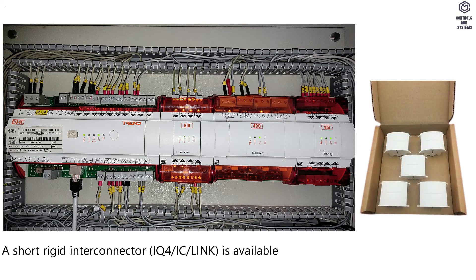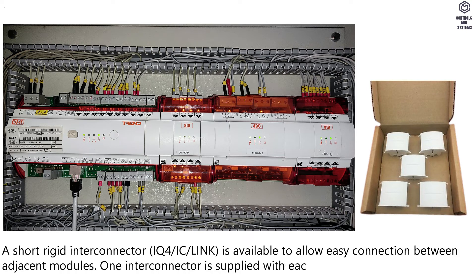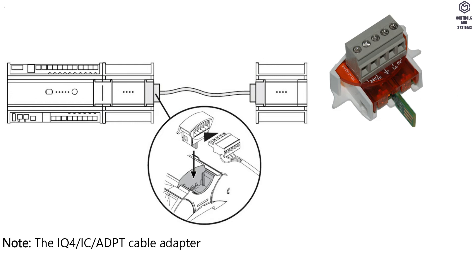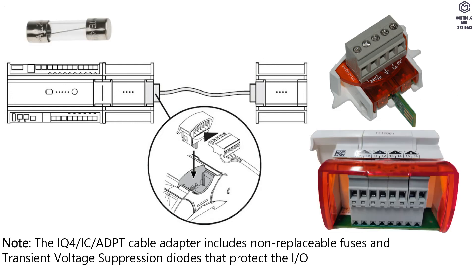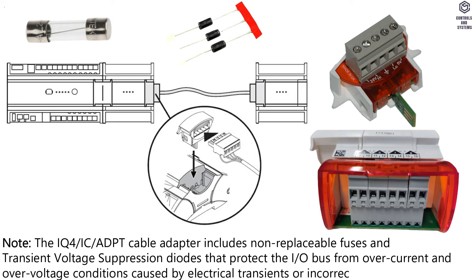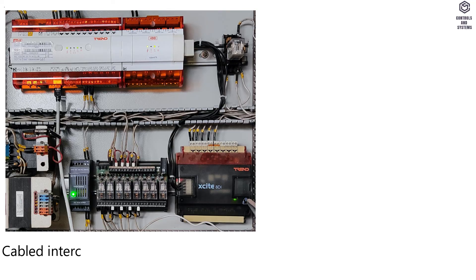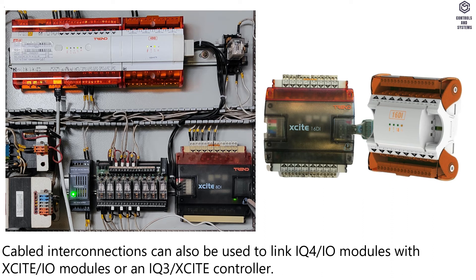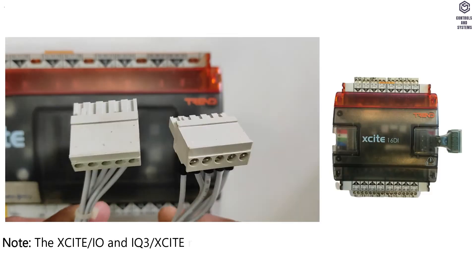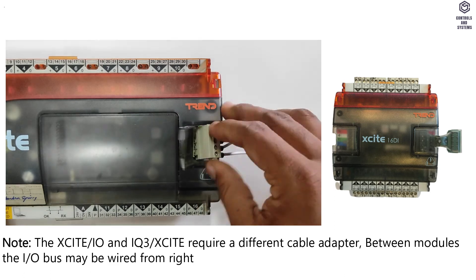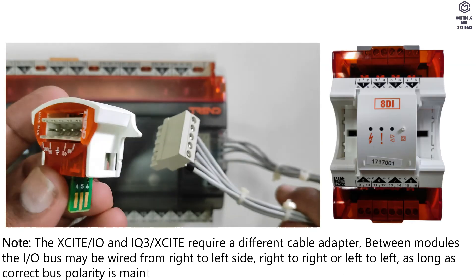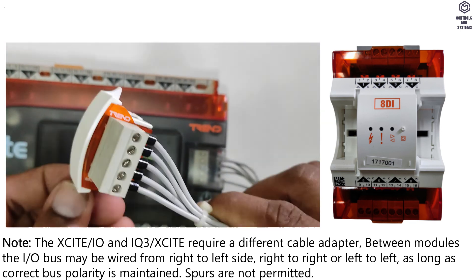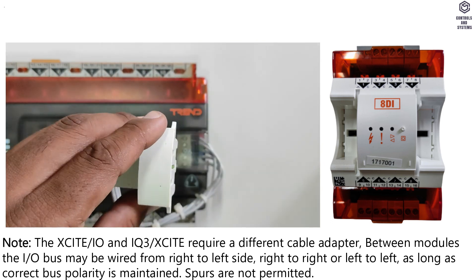A short rigid inter-connector (IQ4IC link) is available for easy connection between adjacent modules; one inter-connector is supplied with each I/O module. Note: the IQ4IC ADPT cable adapter includes non-replaceable fuses and transient voltage suppression diodes that protect the I/O bus from over-current and over-voltage conditions caused by electrical transients or incorrect wiring. Cabled interconnections can also link IQ4IO modules with XSite I/O modules or an IQ3XSite controller; note that the XSite I/O and IQ3XSite require a different cable adapter. Between modules, the I/O bus may be wired right to left, right to right, or left to left, as long as correct bus polarity is maintained. Spurs are not permitted.